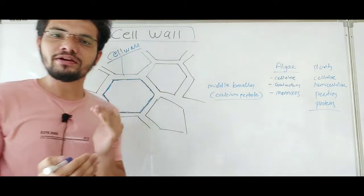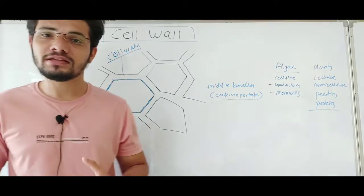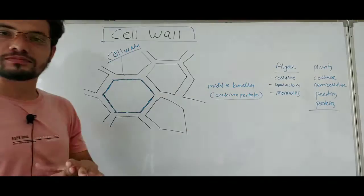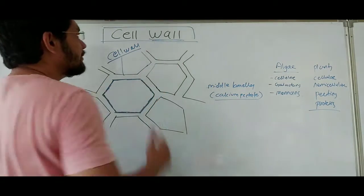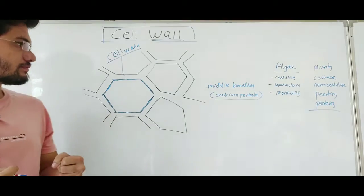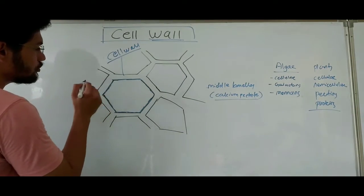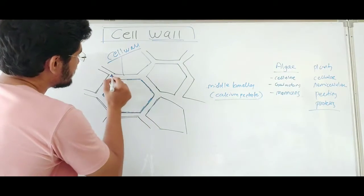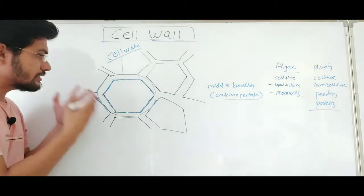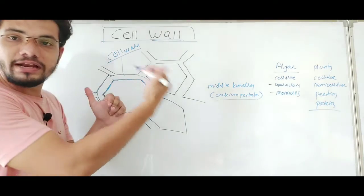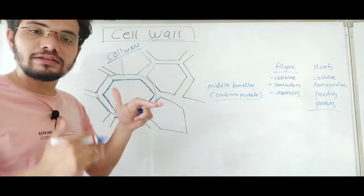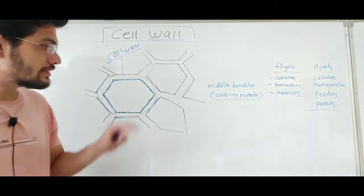The cell wall is the outermost covering present in some cells — like plant cells, fungal cells, and some bacterial cells — but in animal cells this layer is absent. As the name suggests, the cell wall provides mechanical support and rigidity to the cell. In this structure, the portion highlighted in blue is the cell wall, which is present outside the cell membrane.